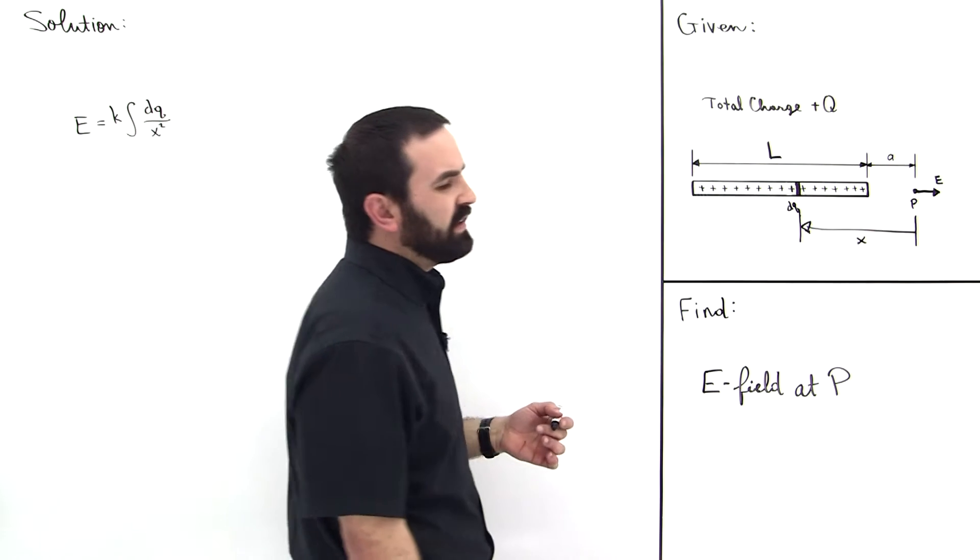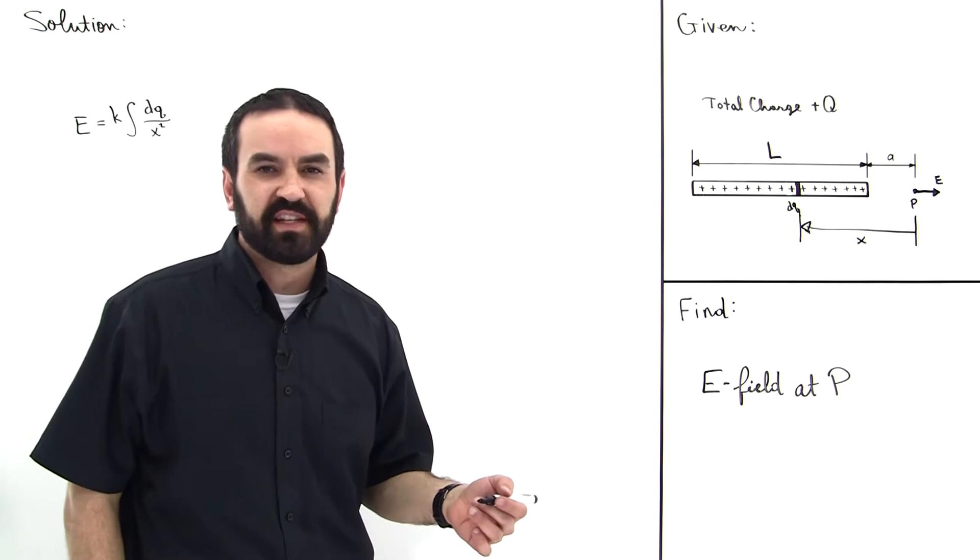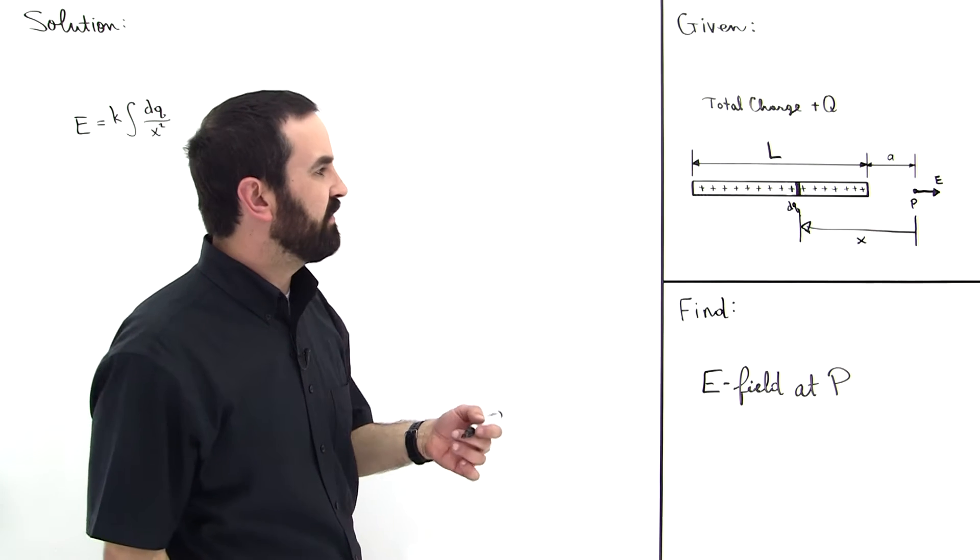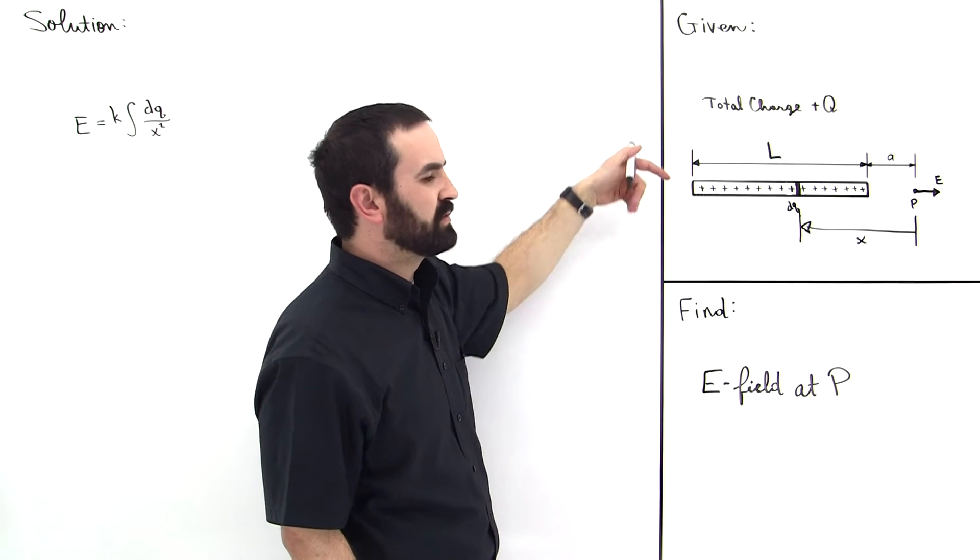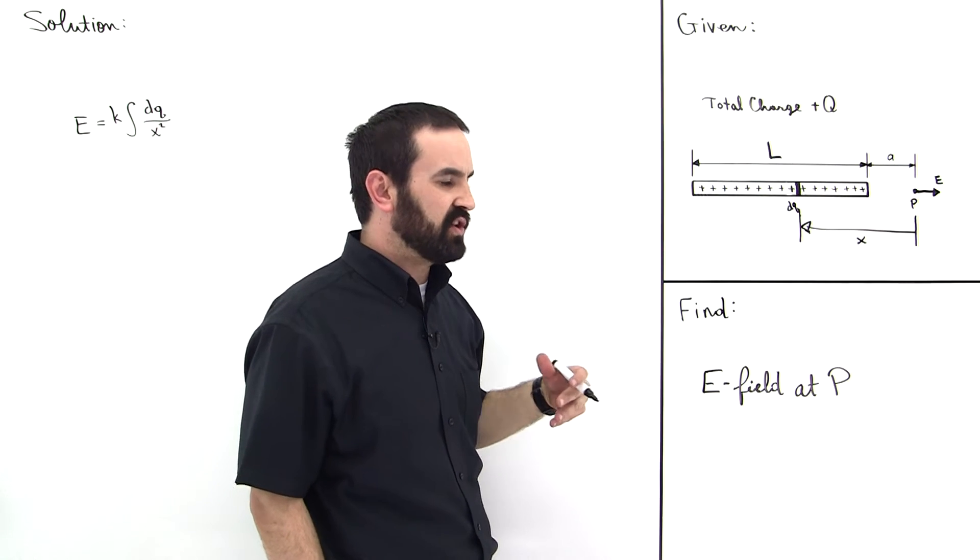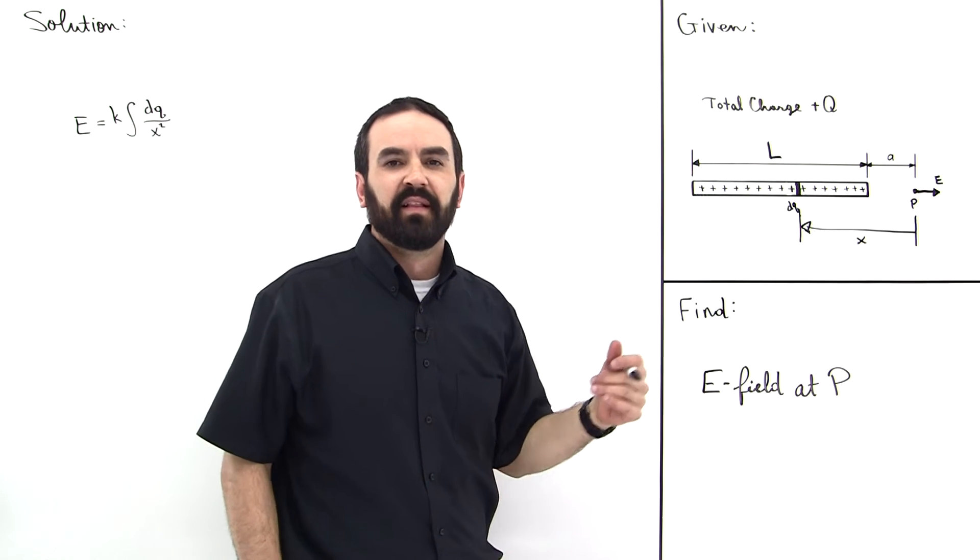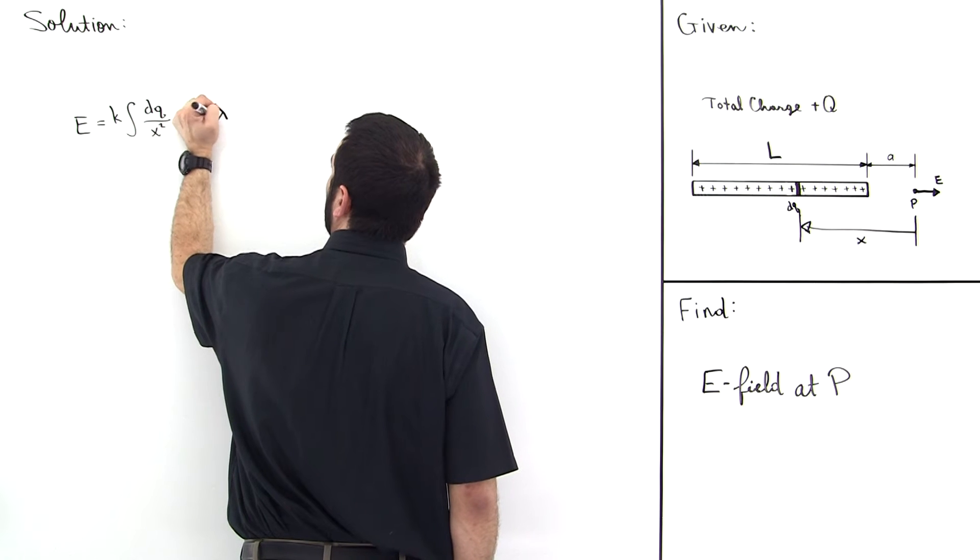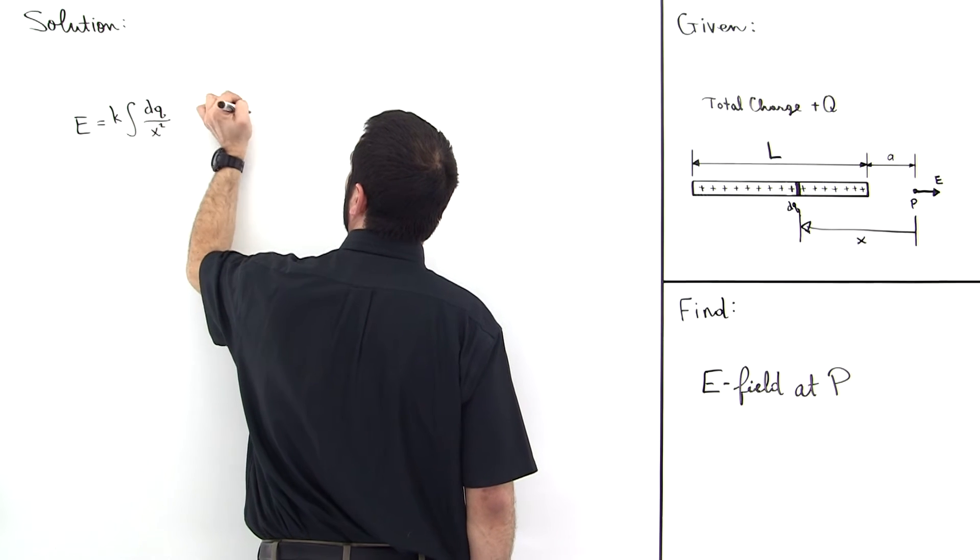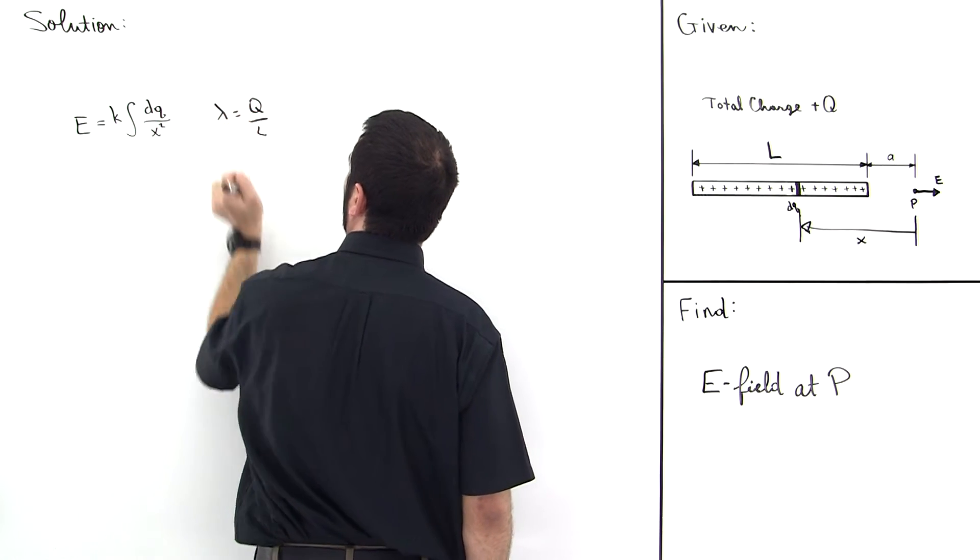One thing that we need to do is to define a linear charge density. We can define that very easily because we know the total charge is plus Q and the total length is L. So define the average linear charge density over the whole rod, Lambda. We'll define Lambda to be equal to plus Q over L.